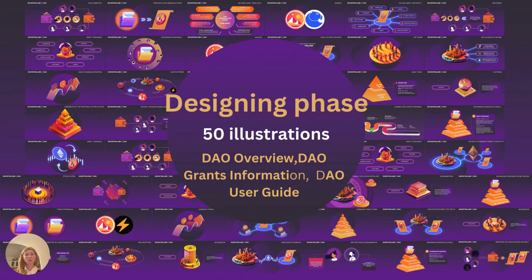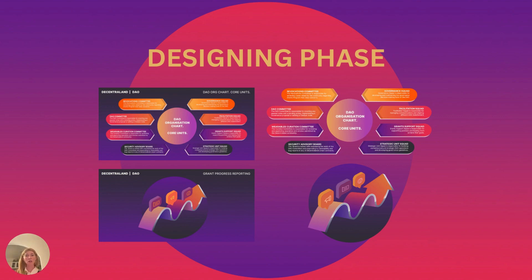The designing phase took the longest. I created 50 illustrations using Photoshop and Illustrator. All illustrations cover three parts of documentation: the overview, grant information, and DAO user guide. As you can see, all illustrations are created with brand guidelines in mind, so all the fonts and colors match the brand guidelines.